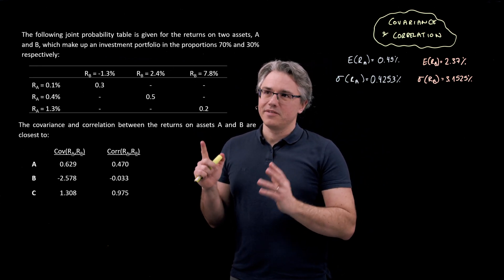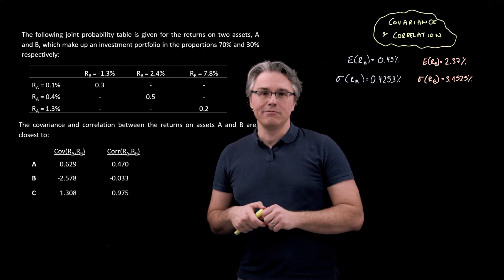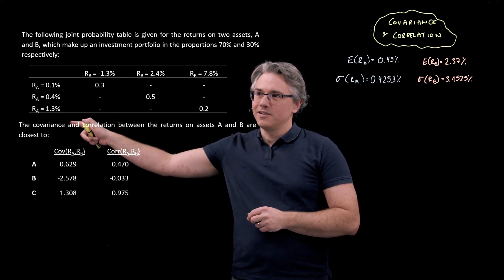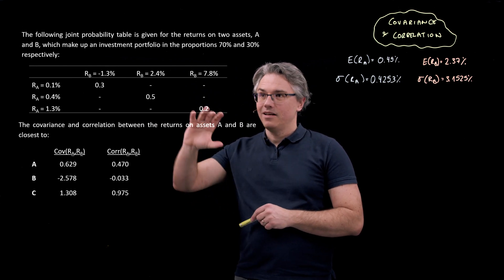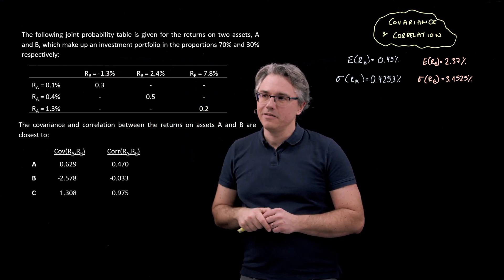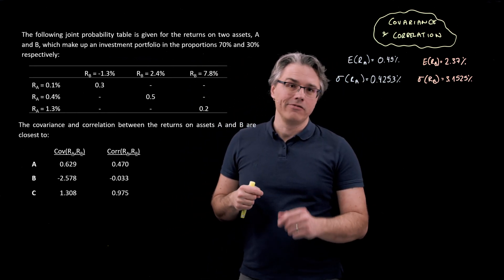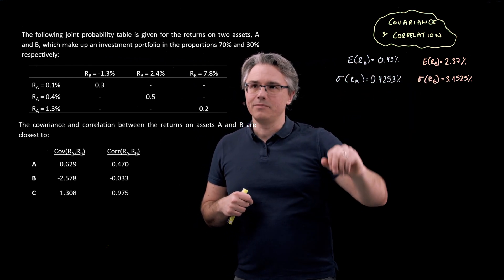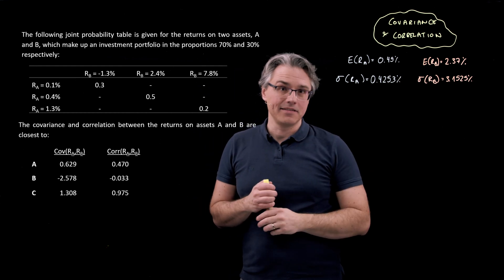It's the same numbers, two assets which are included in a portfolio with certain weights. The returns on asset A on one side, the possible returns on asset B up here, and the joint probabilities in the middle. In the previous two questions, we've already solved for the expected return on respectively asset A and asset B, and also the standard deviation of asset A and asset B.